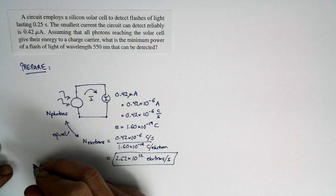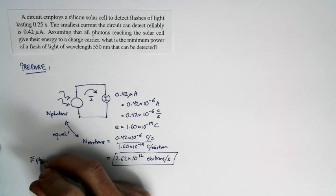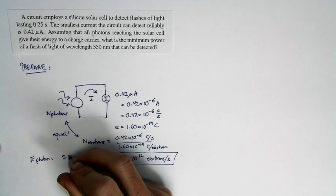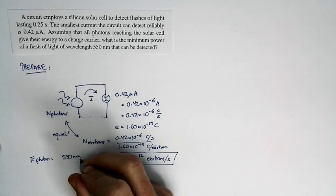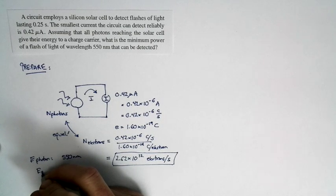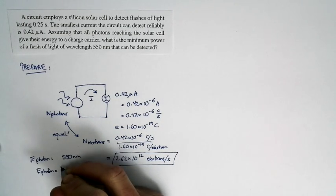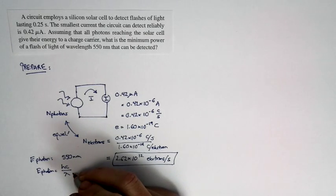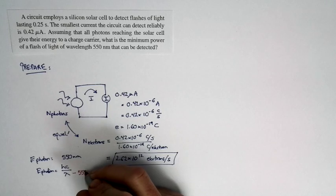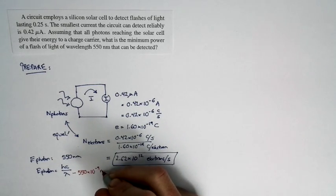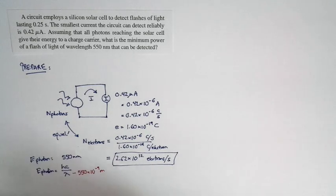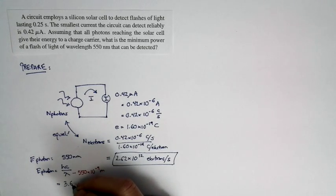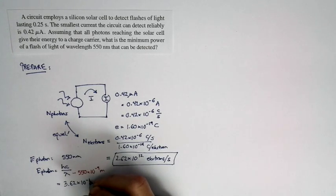Another thing useful to know is the energy corresponding to an individual photon. The photons are 550 nanometers — we're told that. The energy of an individual photon equals Planck's constant times the speed of light divided by the wavelength. The speed of light is 3 times 10 to the 8th meters per second, and the wavelength is 550 times 10 to the negative 9th meters. Calculating this gives us 3.62 times 10 to the negative 19th joules.